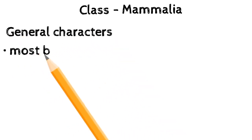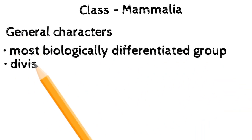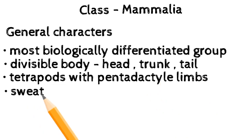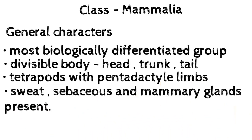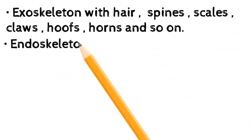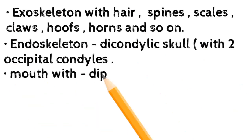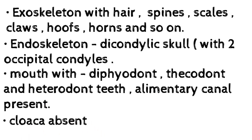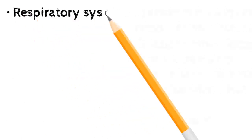Class Mammalia — general characters: the most biologically differentiated group, divisible body with head, trunk, and tail. Tetrapods with pentadactyl limbs. Sweat, sebaceous, and mammary glands present. Exoskeleton with hair, spines, scales, claws, hoofs, horns, etc. Endoskeleton with dicondylic skull having two occipital condyles. Mouth with diphyodont, thecodont, and heterodont teeth. Alimentary canal present; cloaca absent.